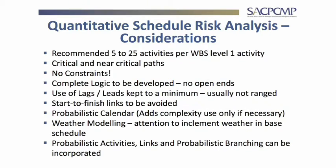For quantitative schedule risk, we import the program — say 5,000 line activities, all with activity numbers. We take the risk register and identify where in the schedule to link each risk. For example, motorized valves being late: we only link them to the four areas where they're being installed. We recommend never linking more than 25 activities in a schedule to one risk.